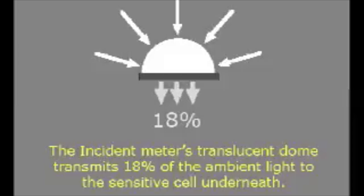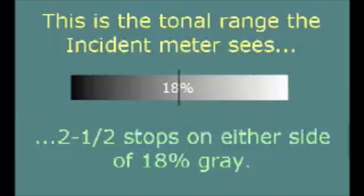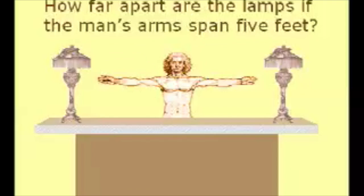The incident meter's translucent dome transmits 18% of the ambient light to the sensitive cell underneath — that's 2 and a half stops down from white. And because this 18% is the average of the ambient light intensities, it's also safe to say that it's 2 and a half stops up from black. In other words, the incident meter sees a total range of 5 stops from black to white, 2 and a half stops on either side of 18% gray.